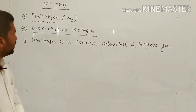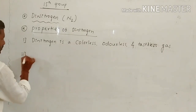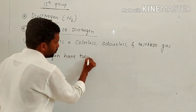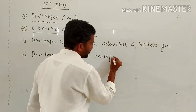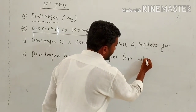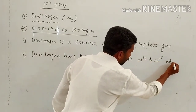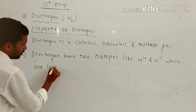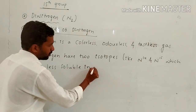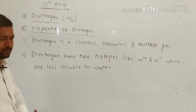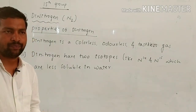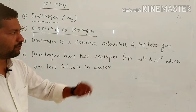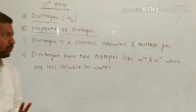The second property: di-nitrogen has two isotopes — N-14 and N-15. These isotopes have the same atomic number but different mass numbers. Both isotopes are less soluble in water.